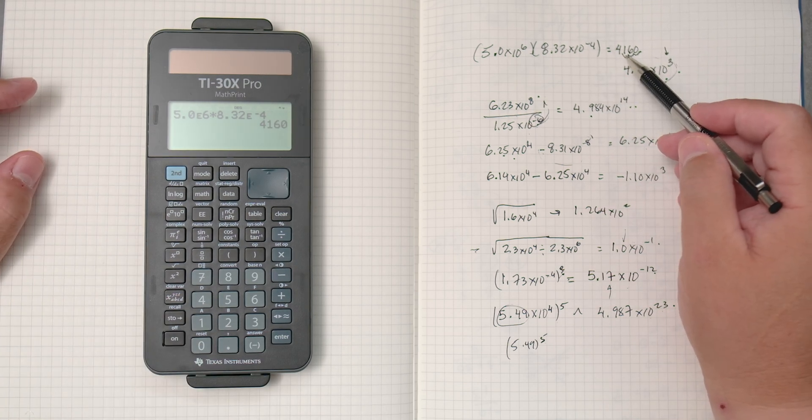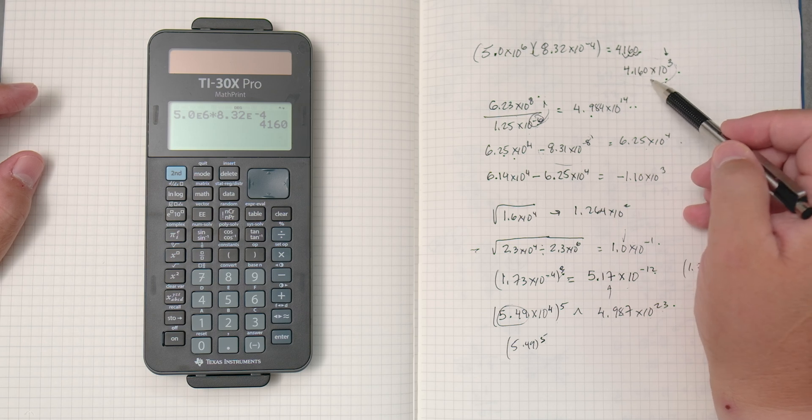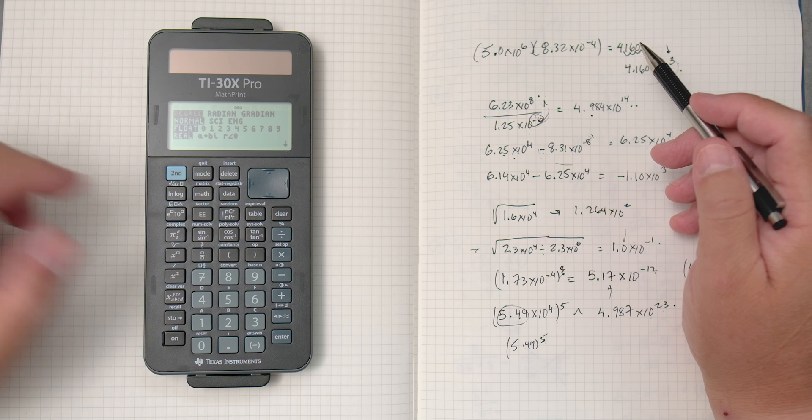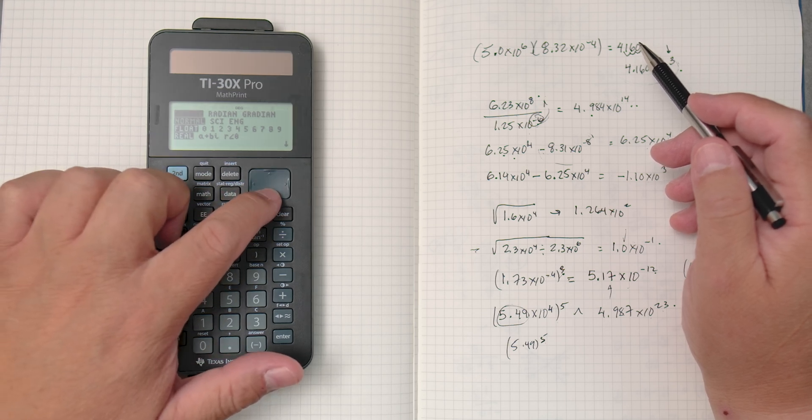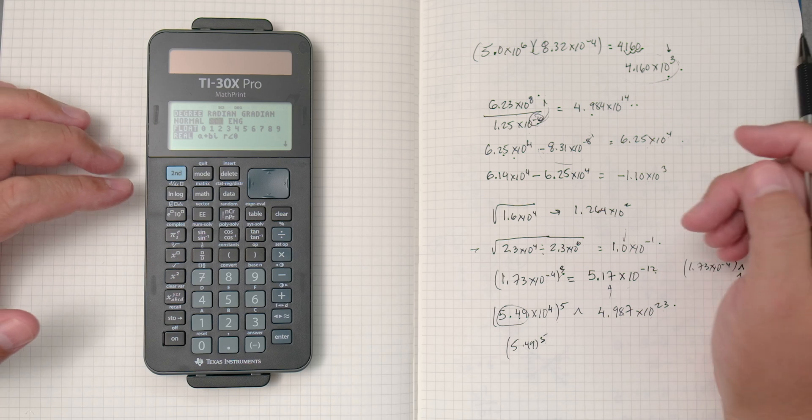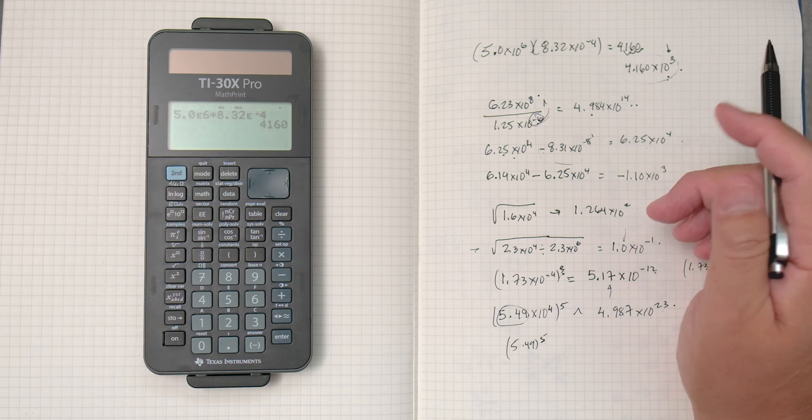It gives you 4,160 but it doesn't give it to you in scientific notation. To do that we press MODE and then we go down and then we go over here to SCI for scientific, enter. And then we go second mode to quit.